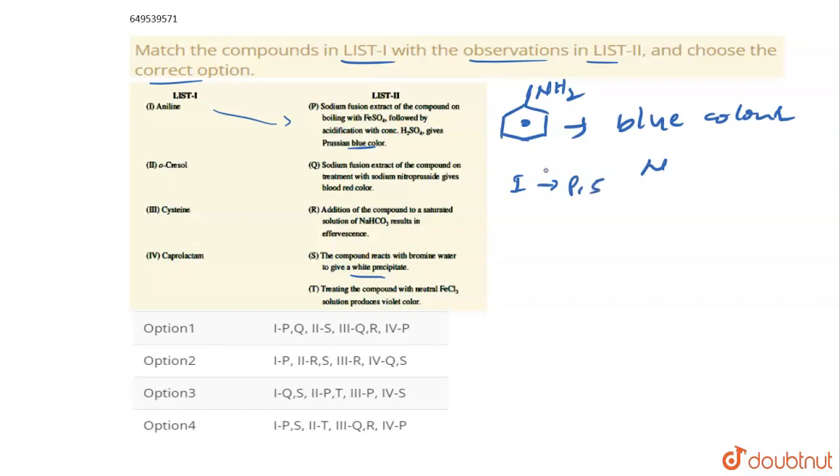Now coming to second one, they are given orthocresol. Orthocresol is nothing but, so here it has methyl group and this one is the OH group. This one is orthocresol. Orthocresol actually is a violet color.